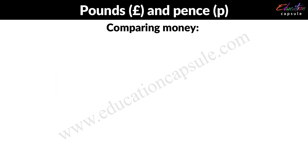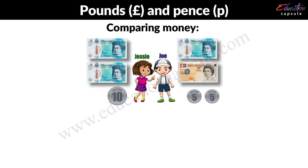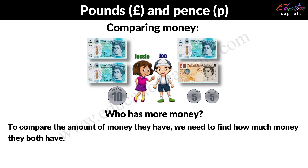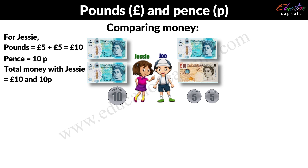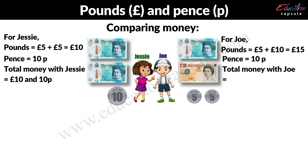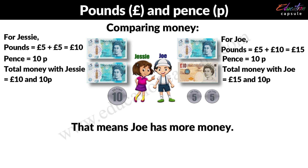The answer would be 48 pence. Comparing money — by looking at this, can you tell me who has more money? To compare the amounts of money they have, we need to find how much money they both have. For Jessie, there are 2 notes of 5 pounds, which equals 10 pounds in total, and there are 10 pence. The total money with Jessie is equal to 10 pounds and 10 pence. For Joe, there are 2 notes of 5 pounds and 10 pounds each, which makes a total of 15 pounds, and along with that he has 10 pence. So the total money with Joe is equal to 15 pounds and 10 pence. That means Joe has more money.